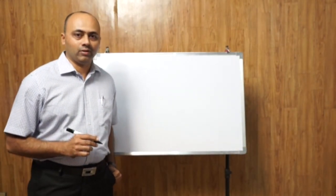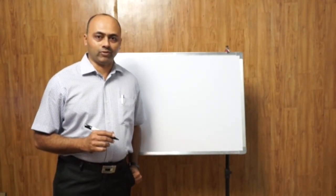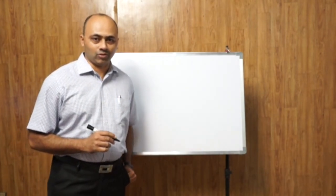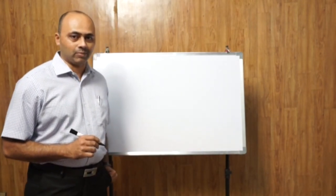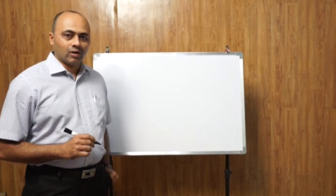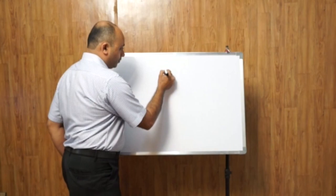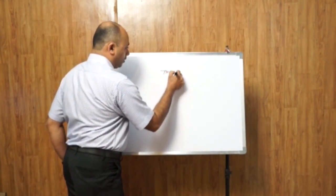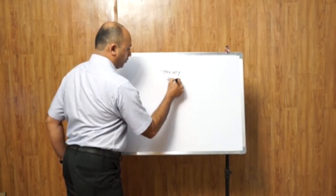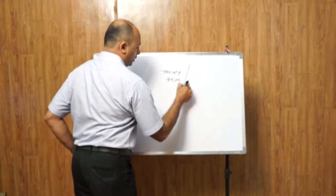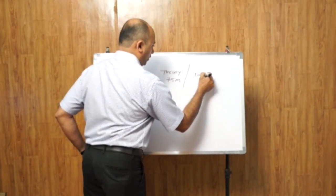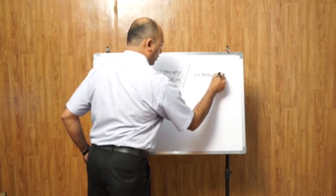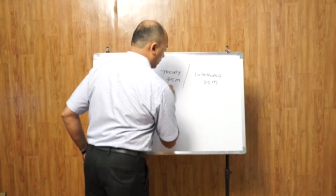Today we are going to have an introduction to Operations Research, which is a compulsory subject in semester 6. The theory paper is of 75 marks and internals are of 25 marks.